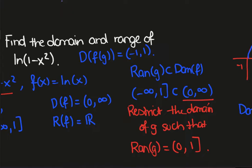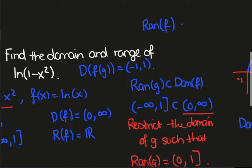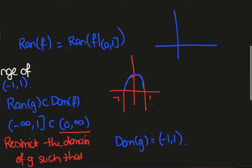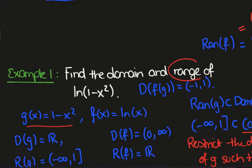To find the range of the composite, we look at the range of f but with its inputs now restricted. The inputs of f are now only [0, 1], so the range of f restricted to [0, 1]. Looking at the graph of ln(x), from 0 to 1 the range is (-∞, 0]. That's the range of the composite: (-∞, 0].